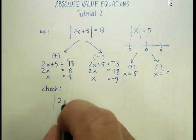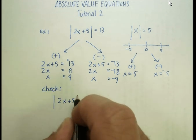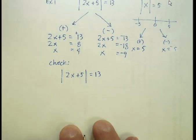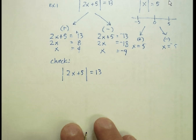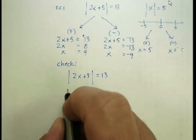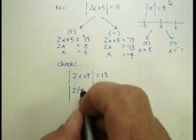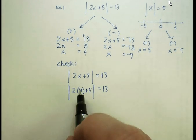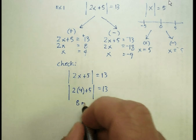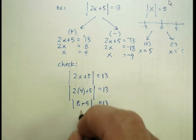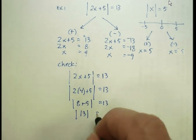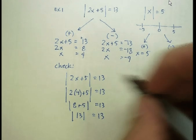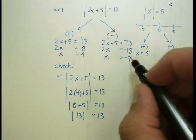So the absolute value of 2x plus five needs to be 13 units away from zero. Excuse me just a second while I adjust that. Okay, so let's check that. The absolute value of 2 times 4 plus 5 is 13. That's 8 plus 5 is 13. And sure enough, the absolute value of 13 is 13, because that's 13 units away from zero. Now let's try it so that one works.